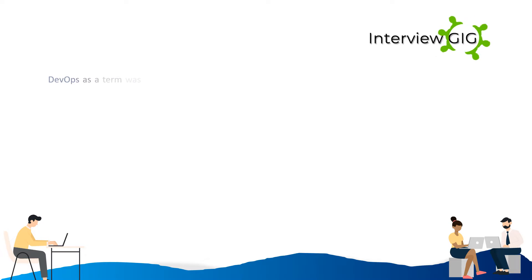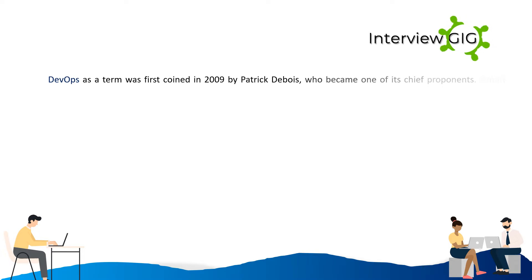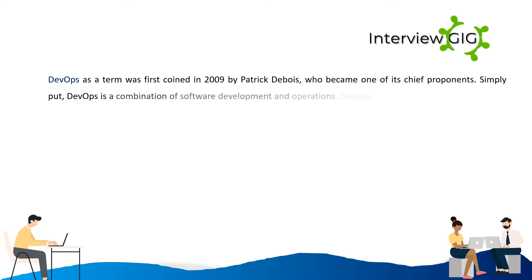DevOps is a term that was first coined in 2009 by Patrick DeBose, who became one of its chief proponents. Simply put, DevOps is a combination of software development and operations.